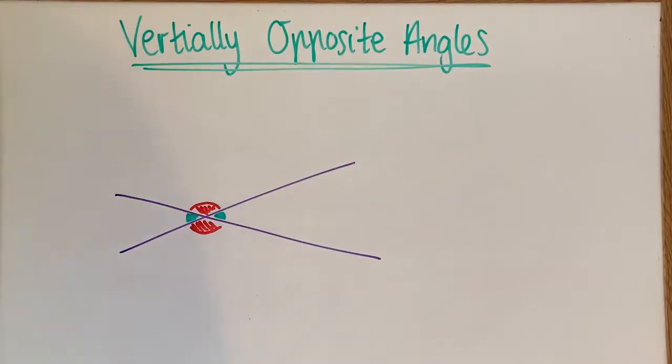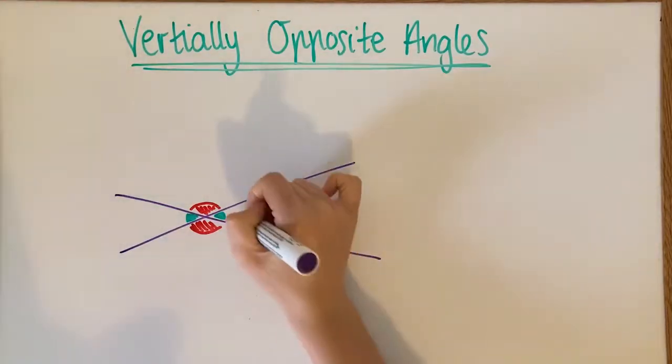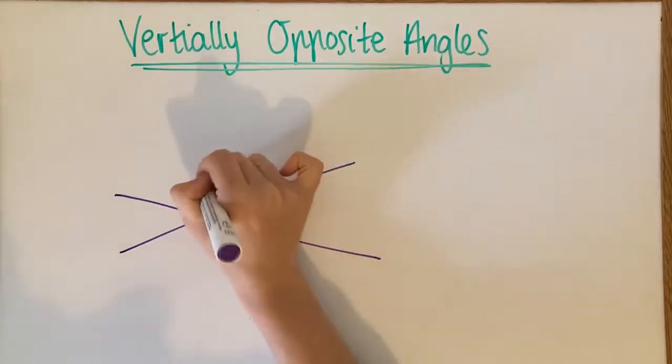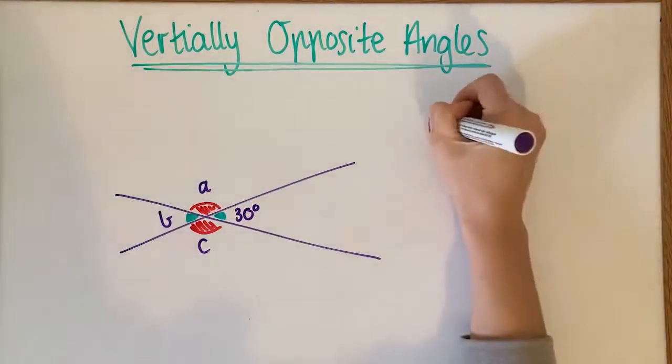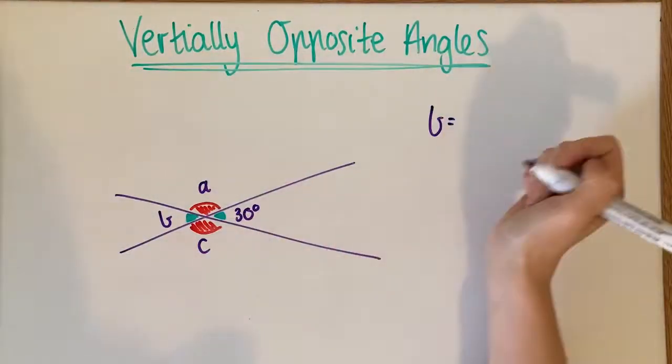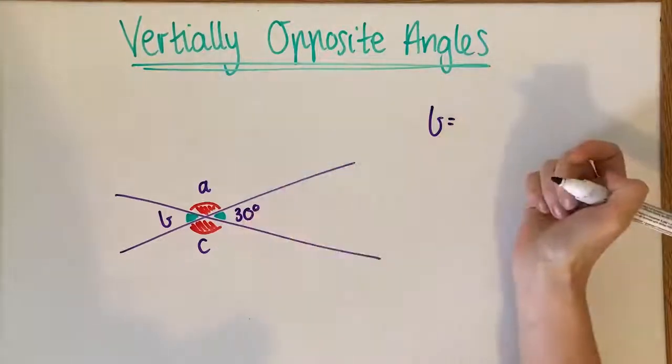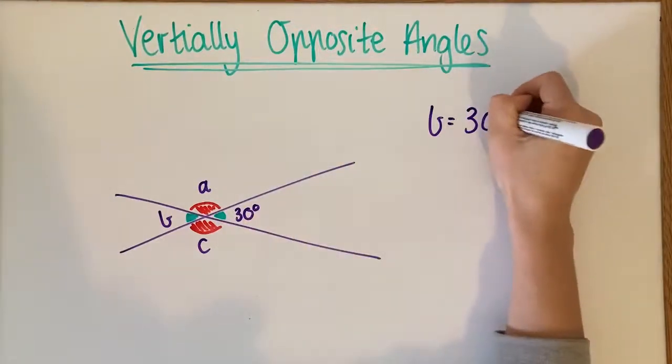Now you might only be given one measurement. So I might be told that this is 30 degrees and I have to explain what A, B and C would be. Now, for me to do that, B is going to be really easy because B is vertically opposite this number, so B would be 30 degrees.